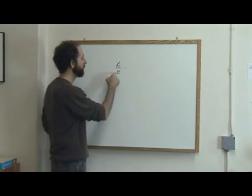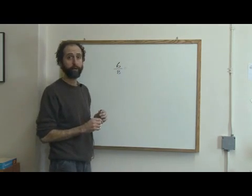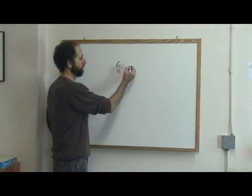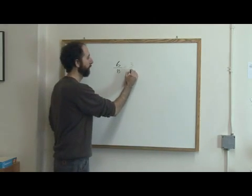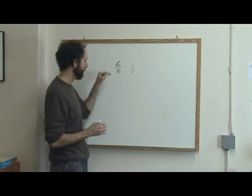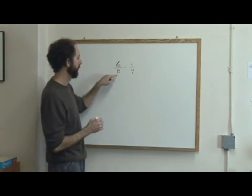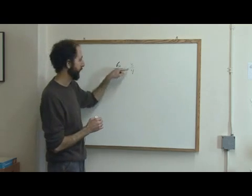So we've got six divided by eight. You can do that on your calculator. You can also reduce this fraction. Six out of eight becomes three over four. If I divide six by two I get three, eight by two I get four. So I get three fourths.